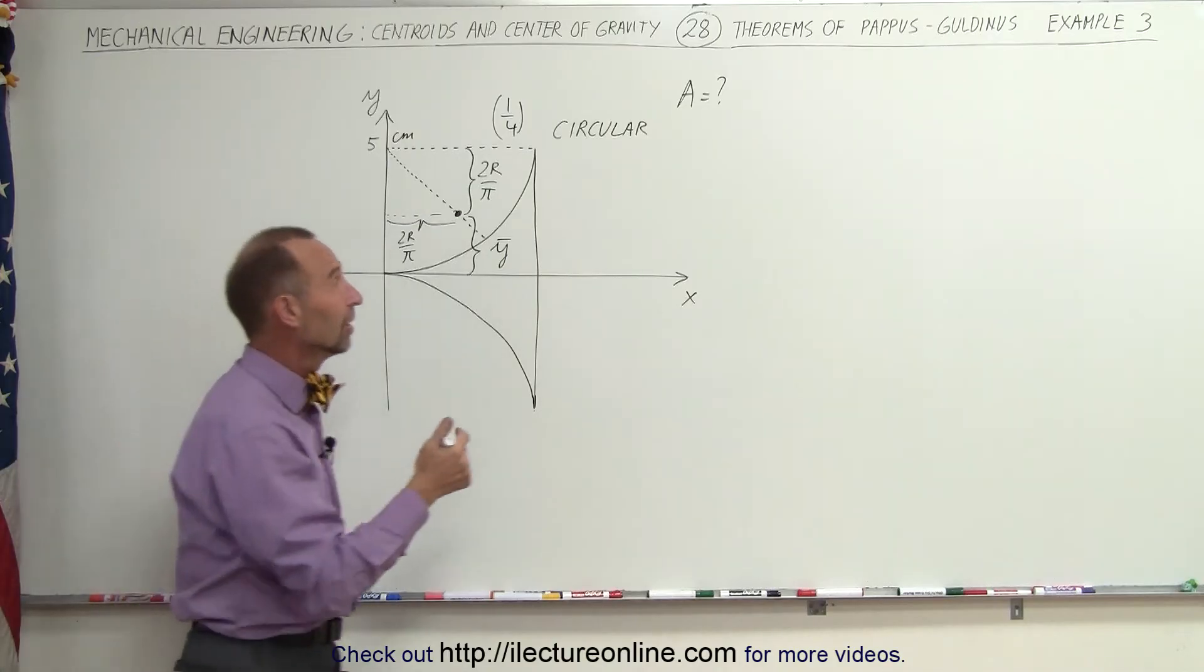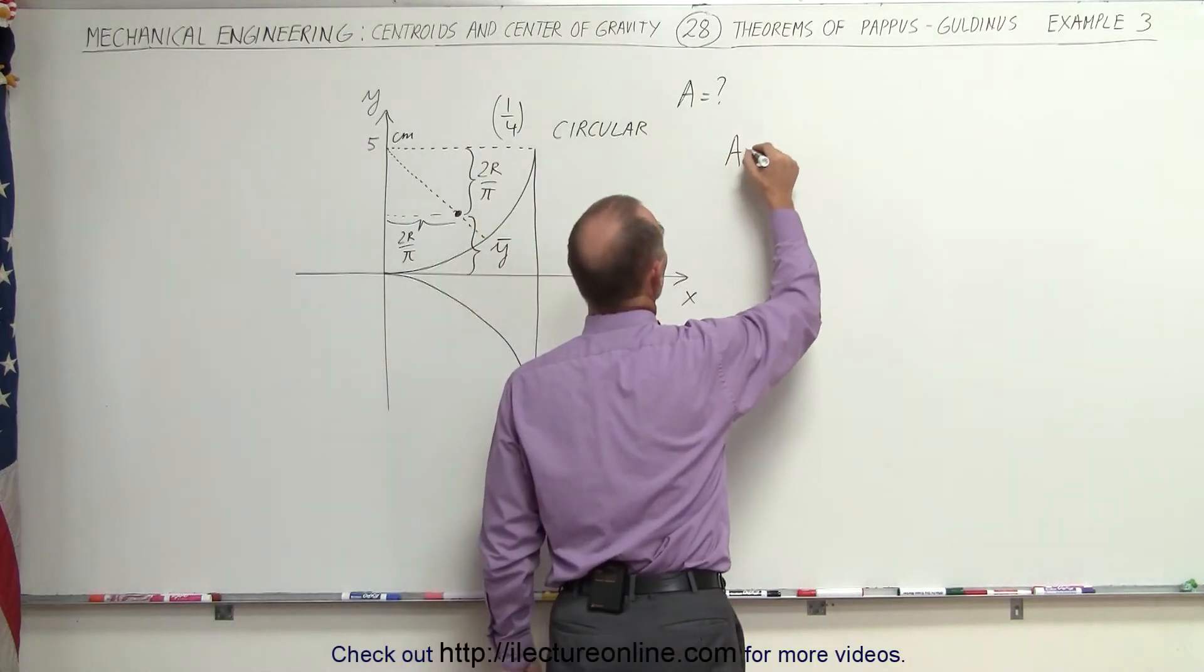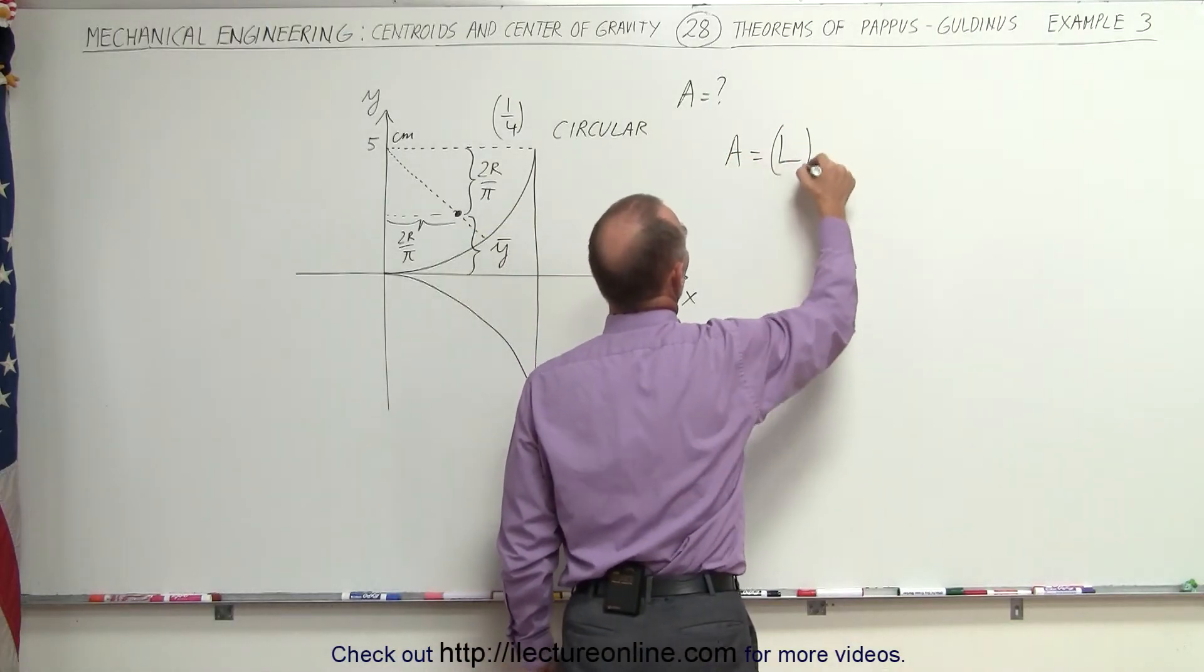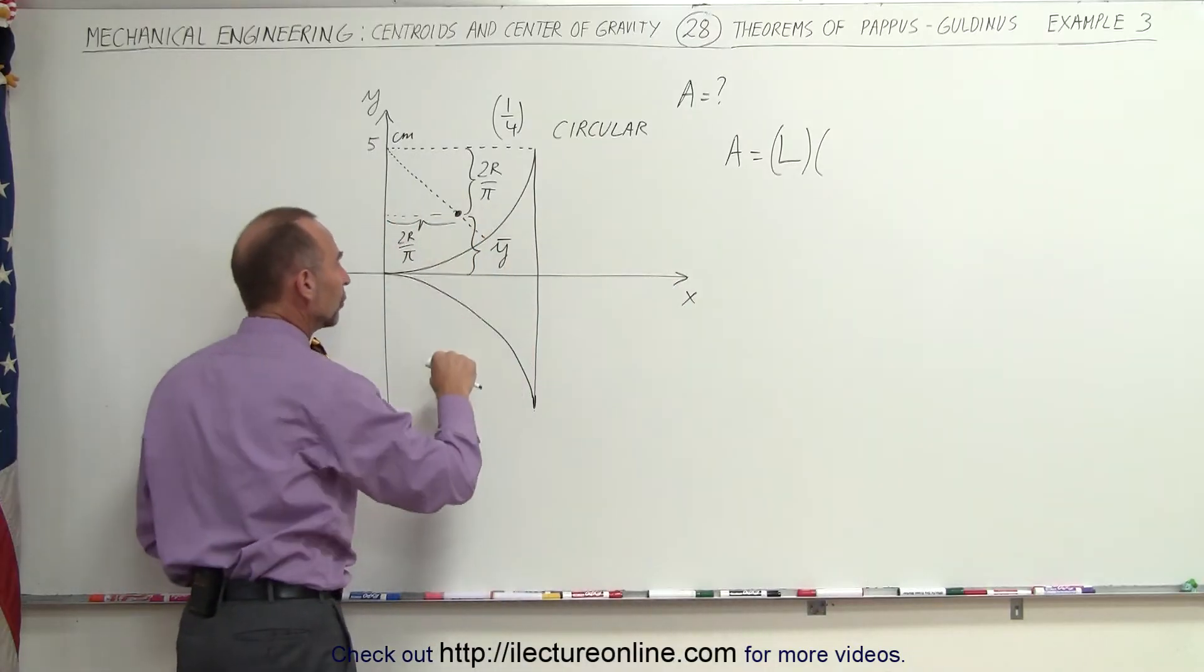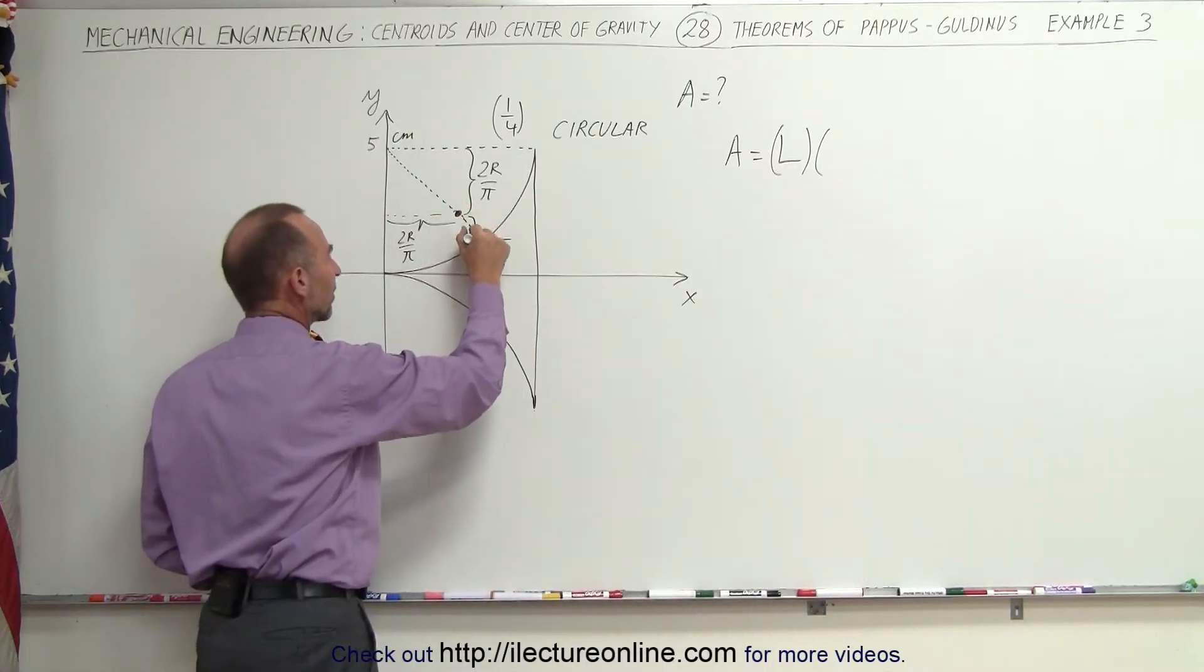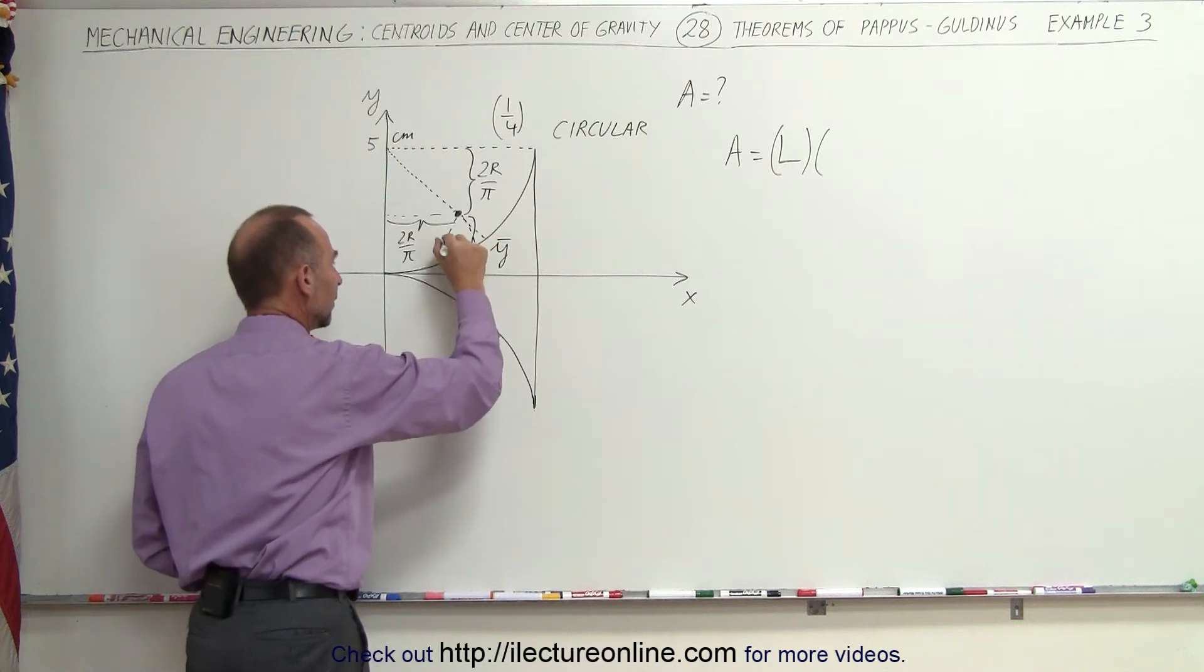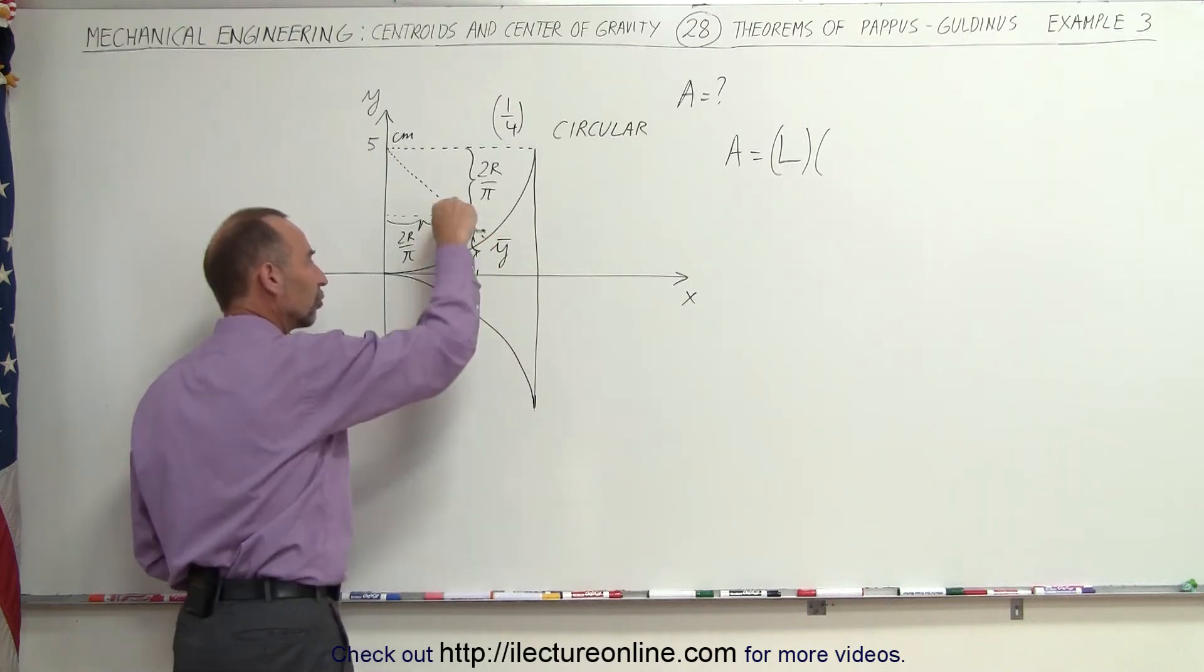The theory says that the area is equal to the length of the curve multiplied times the path length that the centroid takes as you rotate it about the x-axis. So this would be the path length and the path length would have the shape of a circle.